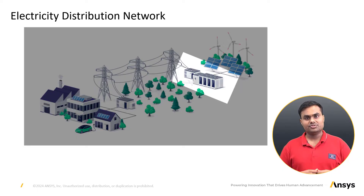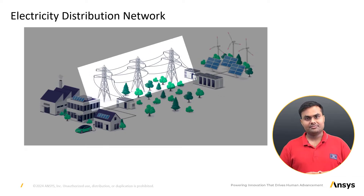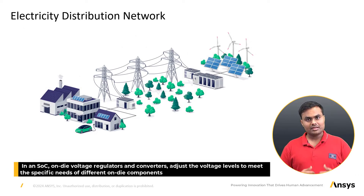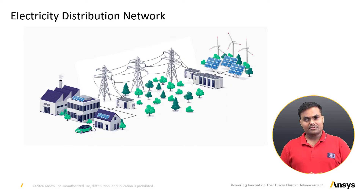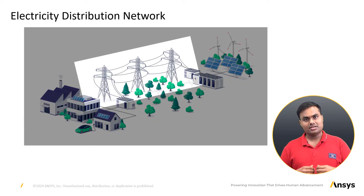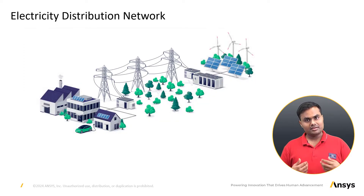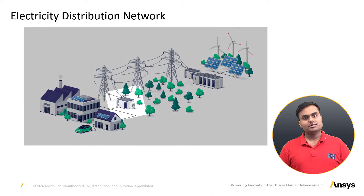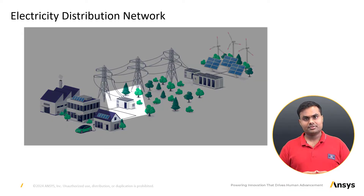The electricity generated is then transferred to voltage step-down transformers to minimize loss during transmission. Similarly, on-die voltage regulators and converters within a SoC adjust voltage levels to meet specific needs of different on-die components. Electricity travels through transmission lines to substations, like a SoC power delivery network including metal traces, interconnects, and package substrate that carry power to various regions of the chip.